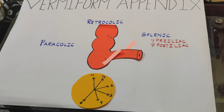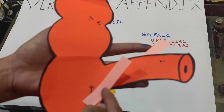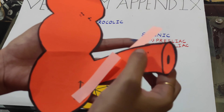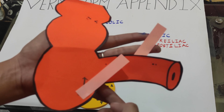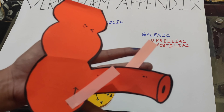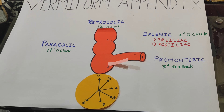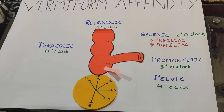When the appendix lies over the ileum, it is called the pre-iliac position; when it is behind the ileum, it is called the post-iliac position. The fourth position is promontoric, or the 3 o'clock position, when the tip of the appendix points towards the sacral promontory.